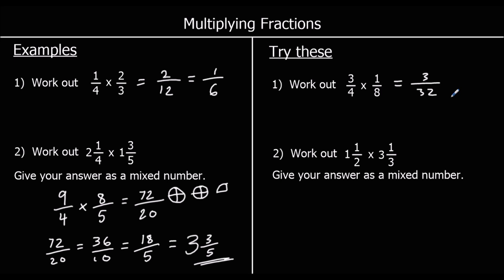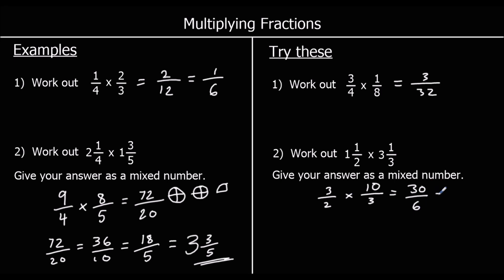Question two: we need to change the mixed numbers to top-heavy first. One and one-half: a whole one is two-halves, plus one-half is three-halves. Three and one-third: three threes are nine-thirds, plus one is ten-thirds. So we have three times ten over two times three, which is thirty over six. Thirty over six is five, so the answer is just five.